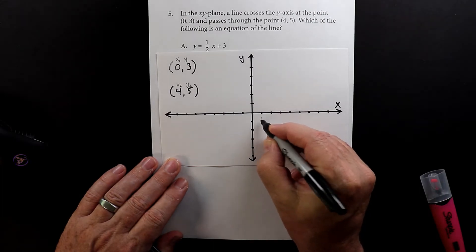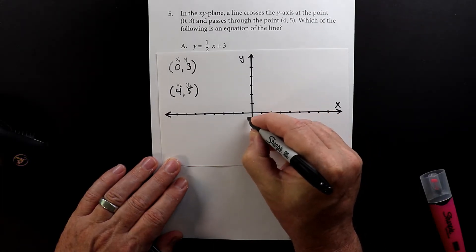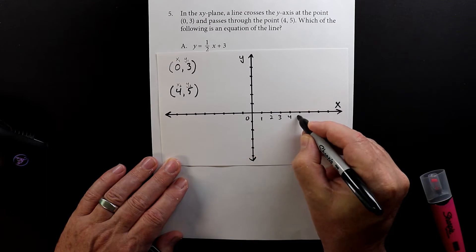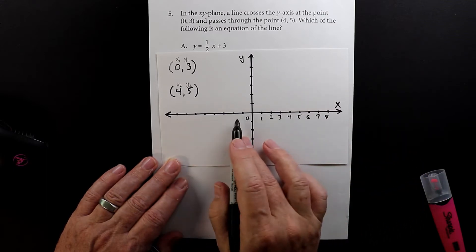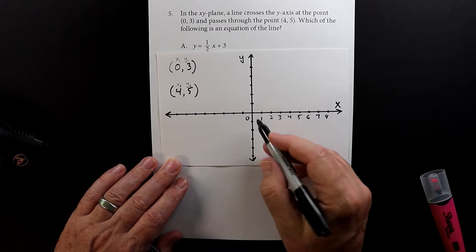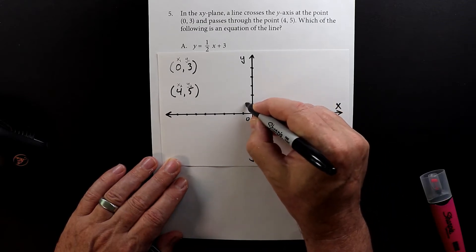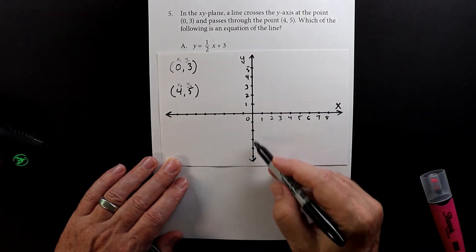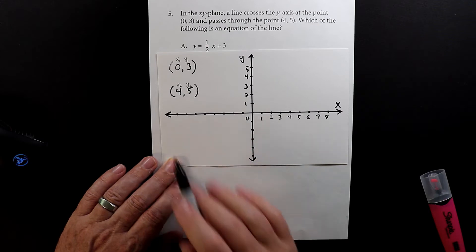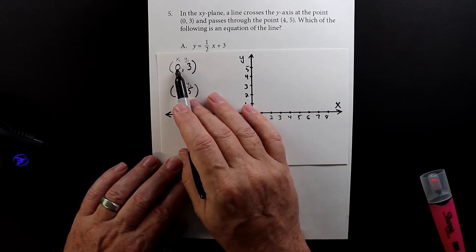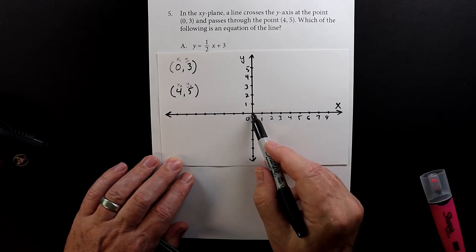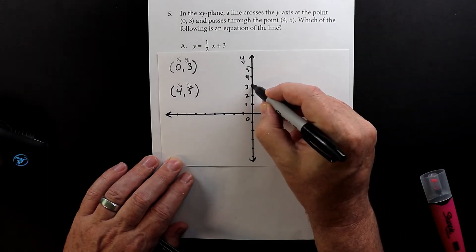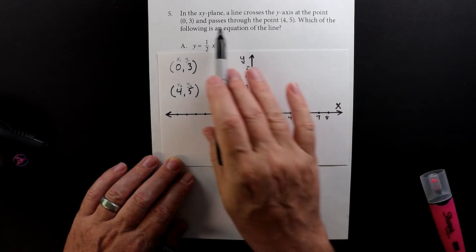Let's find out where those two points live. Each one of these across the bottom are numbers — the center is the origin at zero, then one, two, three, four, five, six, seven, eight. Going up and down we have one, two, three, four, five, up to infinity, and down to negative infinity. The first point has x at zero, so it's right in the middle, and then y goes up three spaces — one, two, three — so here is your first point.